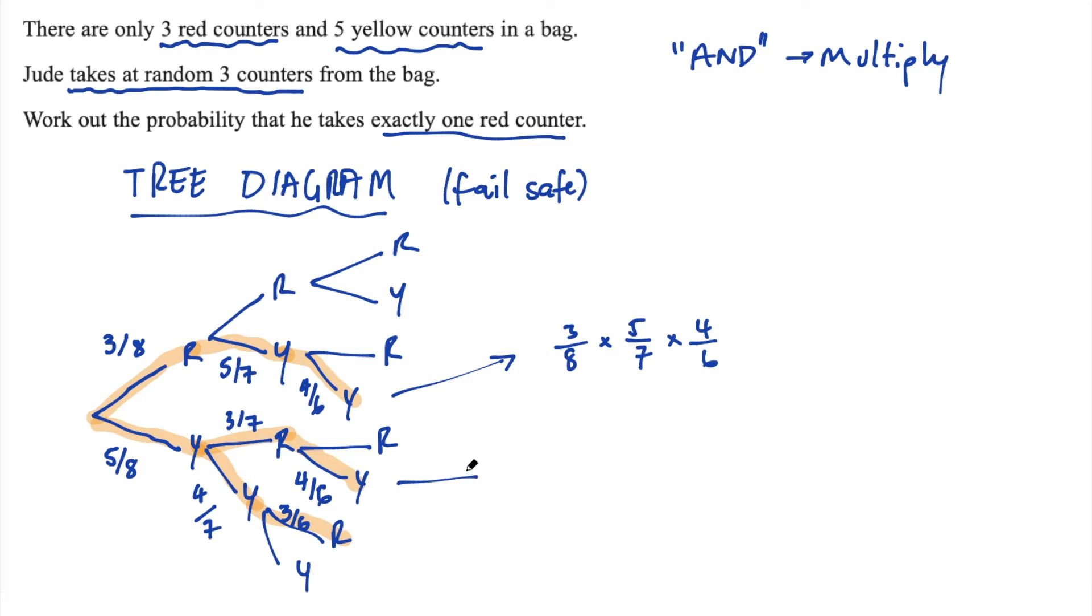And you might notice that all of these are actually going to be the same, right? Five on eight multiplied by three on seven, that one there, multiplied by four on six. And then the final path is five on eight multiplied by four on seven multiplied by three on six.